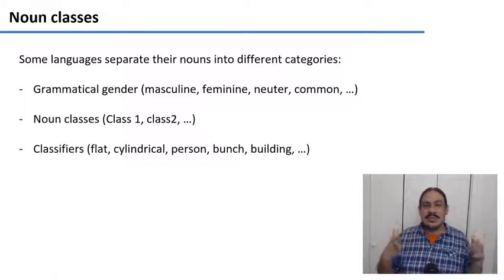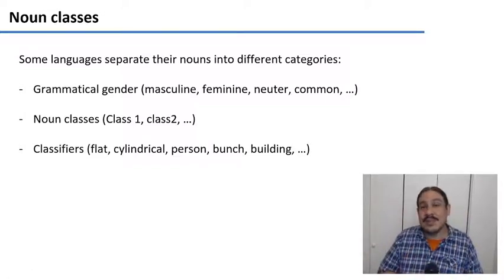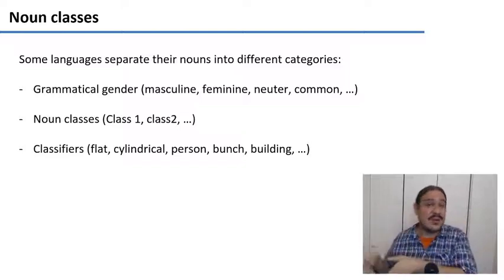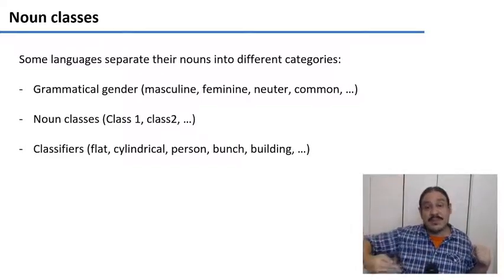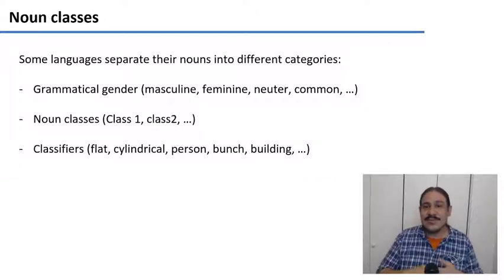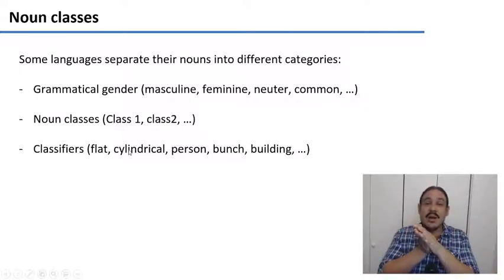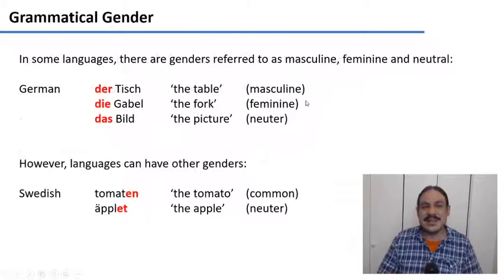Finally, nouns are usually divided into different classes. If you have only a few of these, like two or three, we usually call that grammatical gender — like having grammatically masculine, feminine, or neuter. If you have quite a few of them, we call these noun classes. For example, Swahili has 18 ways to split nouns. And if there are many classes that refer to the shape or characteristics of the object, we call those classifiers.